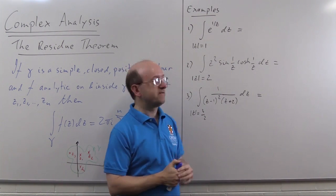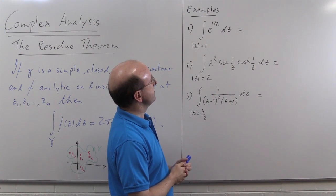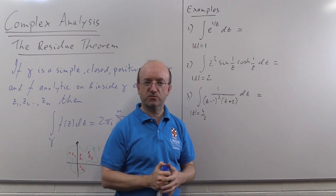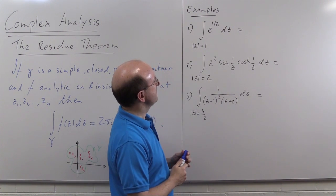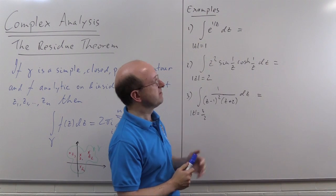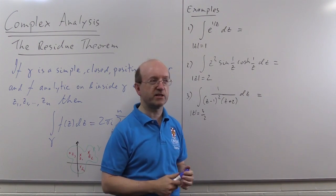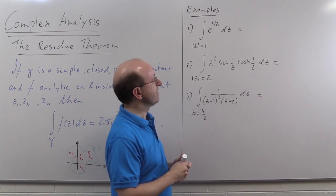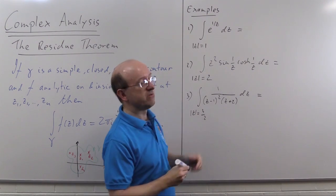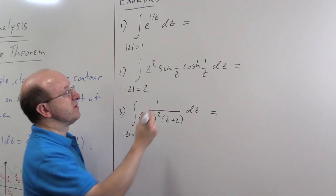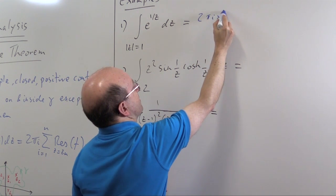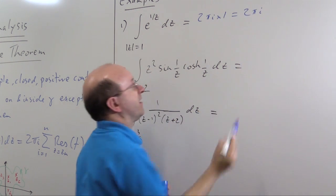So in this first example here integrating e^(iz) dz over the contour |z| = 1 taken once anti-clockwise. Well there's only one singularity inside there and it's z = 0 and we saw in the video on residues at essential singularities that the residue at zero here is simply 1. So this integral is 2πi times 1 or just 2πi.